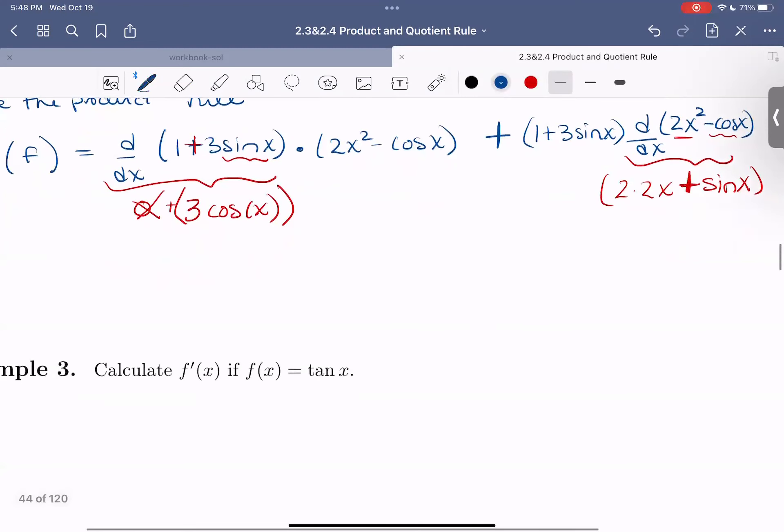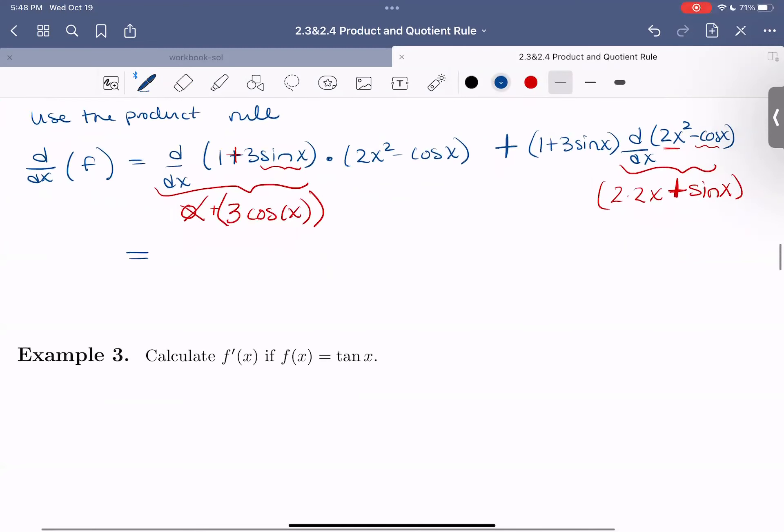Now let's go ahead and rewrite this to clean it up a bit. So this equals 3cos(x) times (2x² - cos x). Remember to keep all of your parentheses, plus (1 + 3sin x) times (the 2 times 2 gives us 4x + sin x).